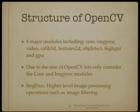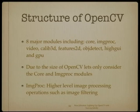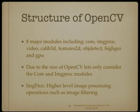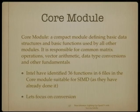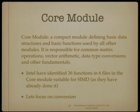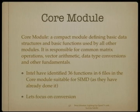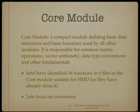OpenCV has eight major modules: core, image proc, video, calibre 3D, features 2D, object detect, high GUI, and GPU. Due to the size of OpenCV, we'll only consider the core and image proc modules. The core module defines basic data structures and basic functions used by all other modules — responsible for common matrix operations, vector arithmetic, and data type conversions. Intel have identified 36 functions in six files in the core module suitable for SIMD. We should be learning from these candidates and developing NEON versions.